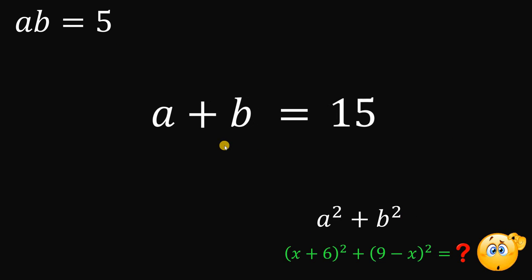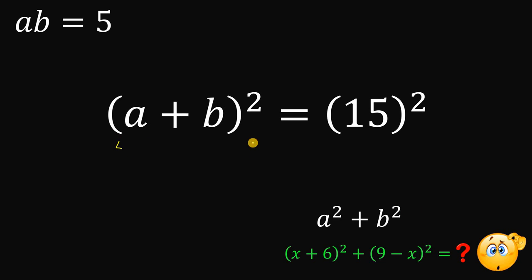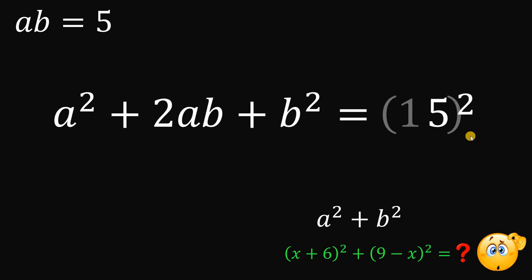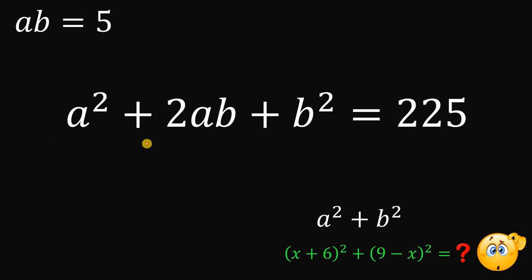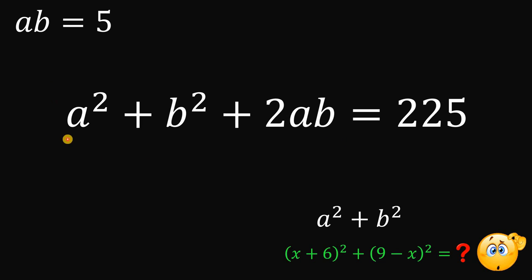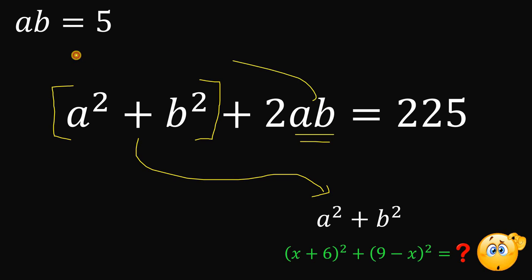To find a squared plus b squared, let's square both sides of a plus b equals 15. Note that a plus b raised to the power of 2 expands to a squared plus 2ab plus b squared, and 15 squared equals 225. Rearranging the left-hand side, we isolate a squared plus b squared — which is what we want to find. We also have a value for a times b, which equals 5 from our first equation. So we can replace a b with 5.